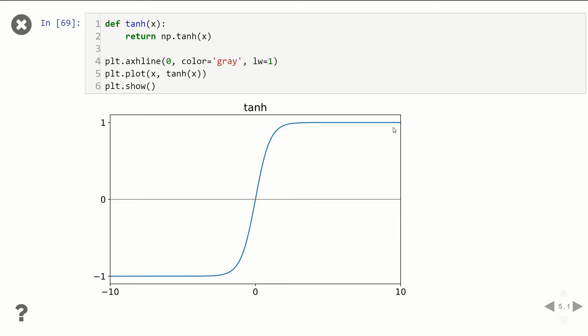But the problem with the tanH and the sigmoid is they flatten out in the plus or negative direction. You can see the slope of the line pretty much goes to zero. Once we cross like, say, just a few integers, positive or negative, the slope is going to go to zero. This is what's called the vanishing gradient. We'll talk about this more later.